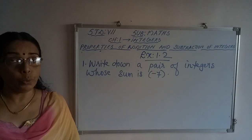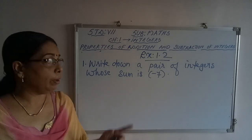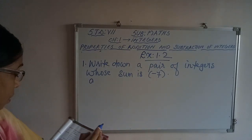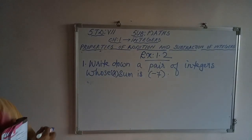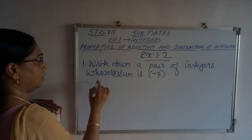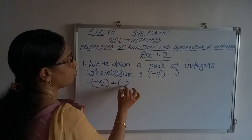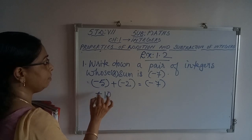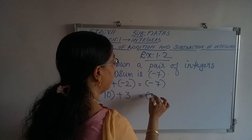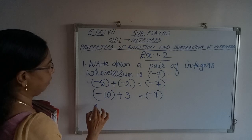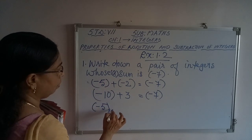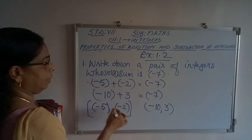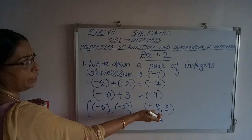For example, minus 5 added with minus 2 gives minus 7. Otherwise, minus 10 added with plus 3 also gives minus 7. So two possible pairs are: minus 5 and minus 2, or minus 10 and 3. You can write either of these pairs as your answer.